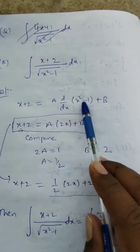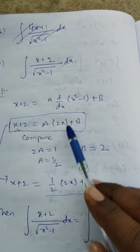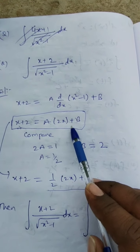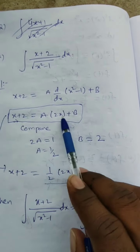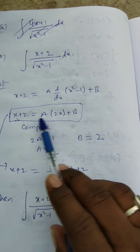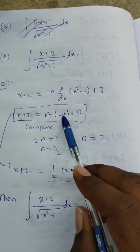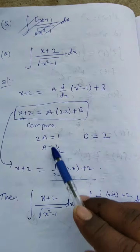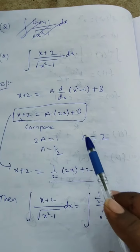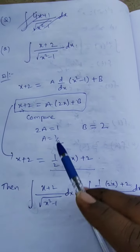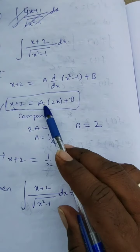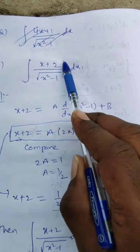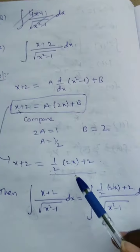Differentiate x² - 1: the differentiation of x² is 2x, and the differentiation of 1 is 0 plus b. So I get x + 2 = 2ax + b. Now compare: 2a = 1, so a = 1/2. And comparing the constant, b = 2. So x + 2 can be written as (1/2)(2x) + 2.